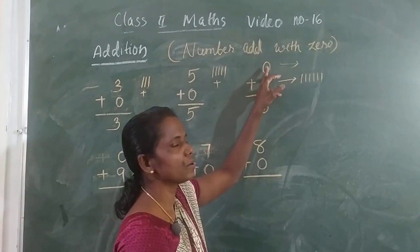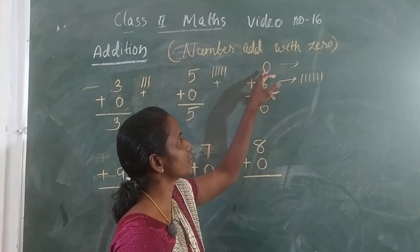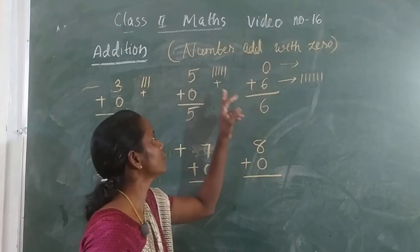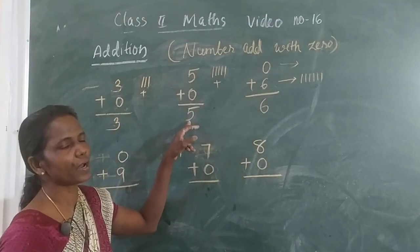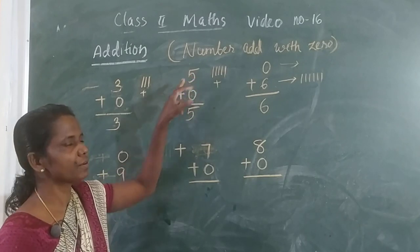6 plus 0, 6. 0 plus 6, 6. Clear? 5 plus 0, 5. 0 plus 5, 5.